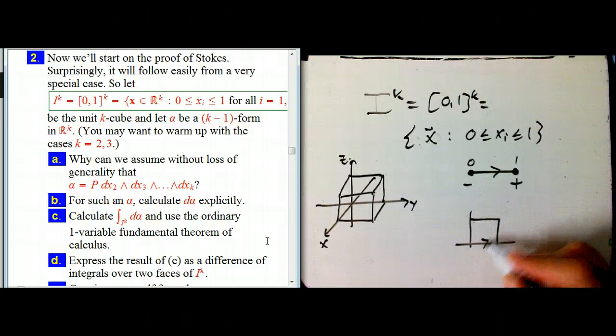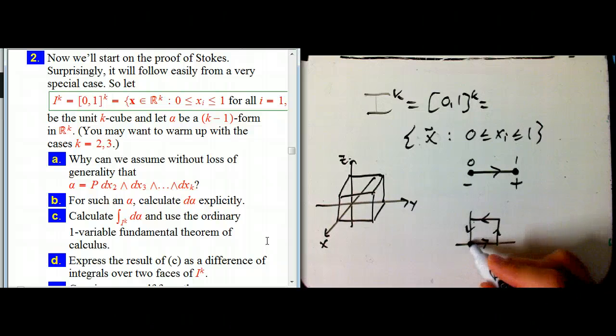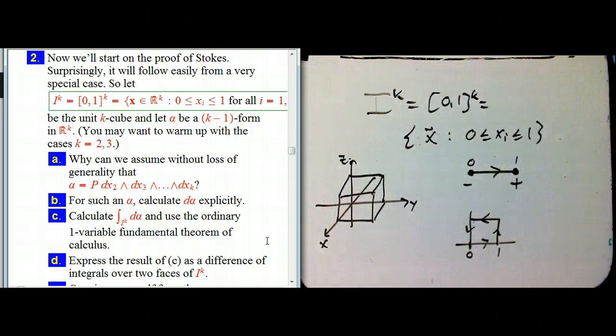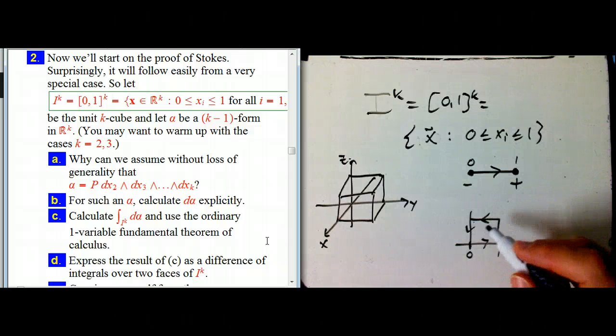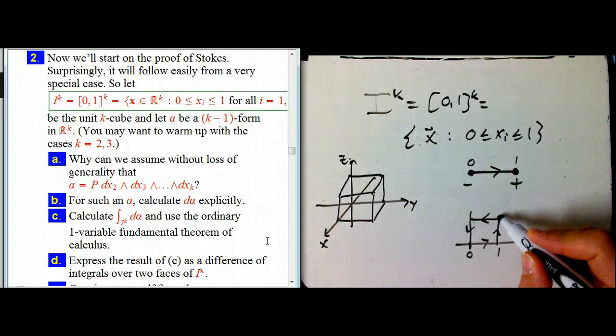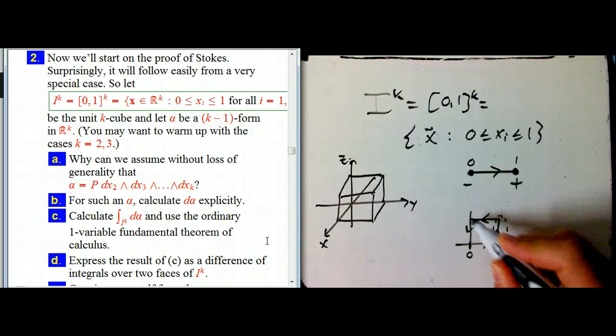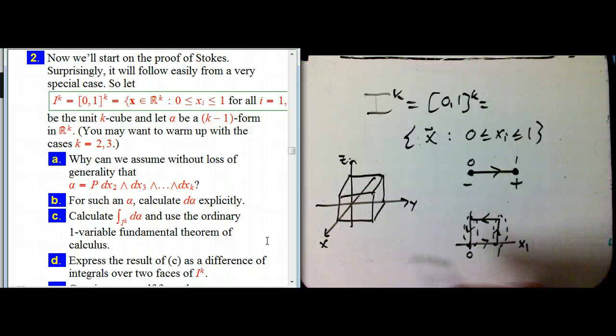We're pretty familiar with what the correct orientation of the unit square is, it's counterclockwise. And what I want to focus on, it's going to turn out that I'm going to be really focusing on just the two parts of the boundary where x_1.